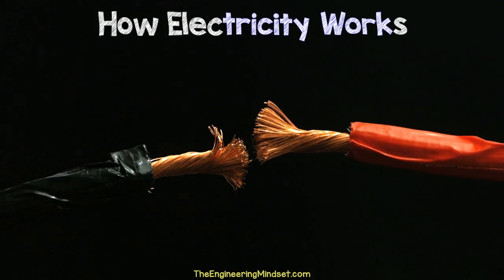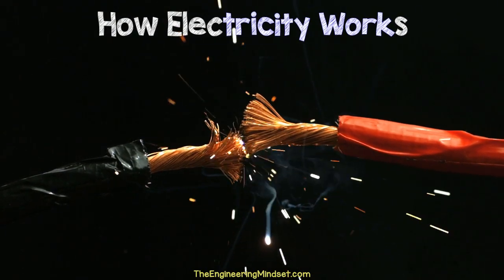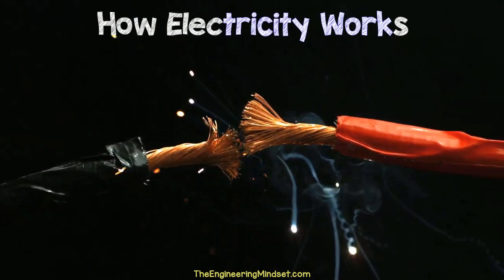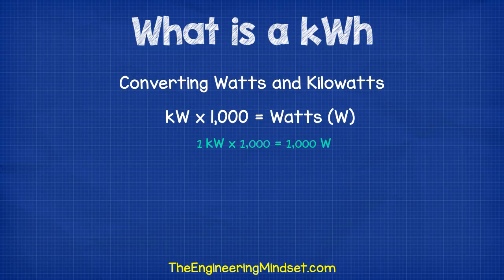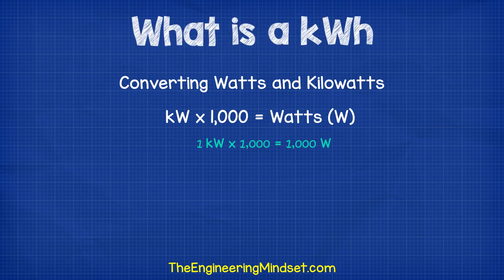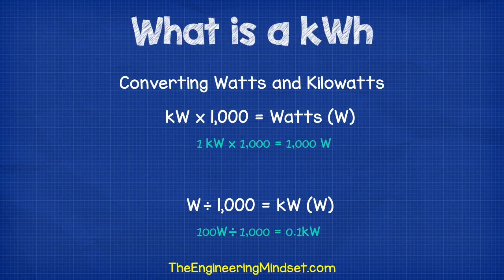If you want to learn more on the basics of electricity, then you can watch one of our other videos on how electricity works — the link is on the screen now in the top right corner, or you can see the description box below. You can convert kilowatts to watts simply by multiplying by 1,000, so 1 kilowatt multiplied by 1,000 is 1,000 watts. You can also convert watts to kilowatts simply by dividing by 1,000, so 100 watts divided by 1,000 is 0.1 kilowatts.